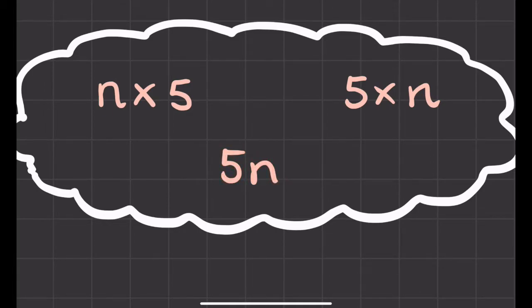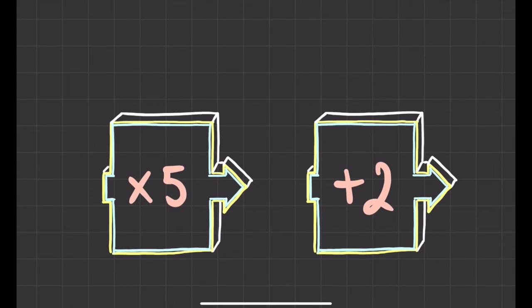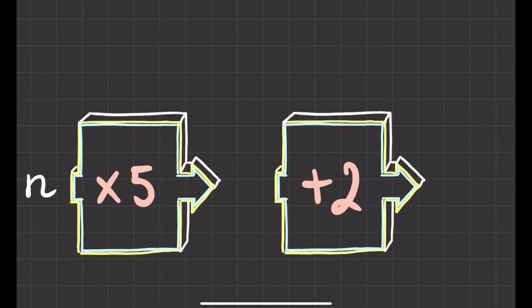Because five times n just means five groups of n — so 5n. If you see a number written next to a letter, it means you've got that many of that letter, or that many groups of it, or that number multiplied by that letter — they all mean the same thing. So for a slightly longer function machine: if I put in the number n, I times it by five to get 5n, and then add on two, my answer will be 5n plus two.